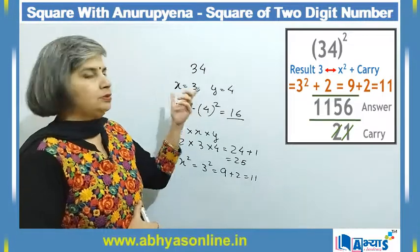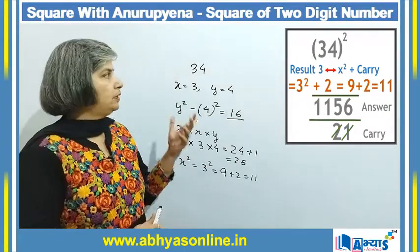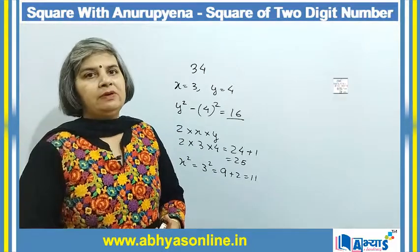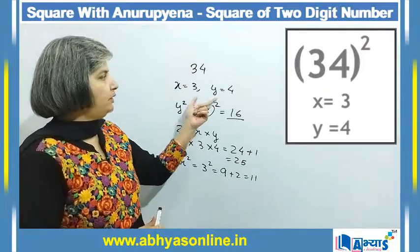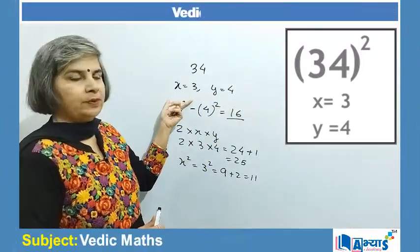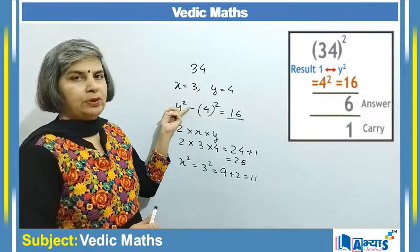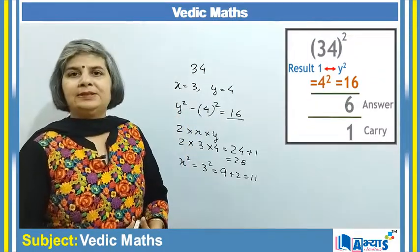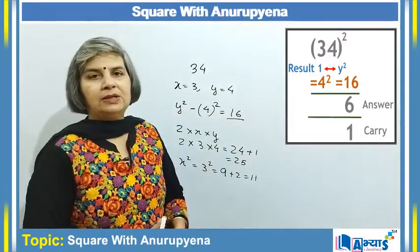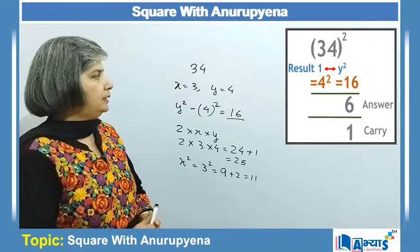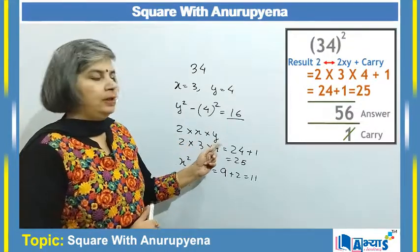To summarize: I considered the two-digit number 34, with the tens digit as x = 3 and the ones digit as y = 4. First, I found y squared — that is, 4² = 16. Since 16 is a two-digit number, I prefixed 6 in the answer and carried 1.